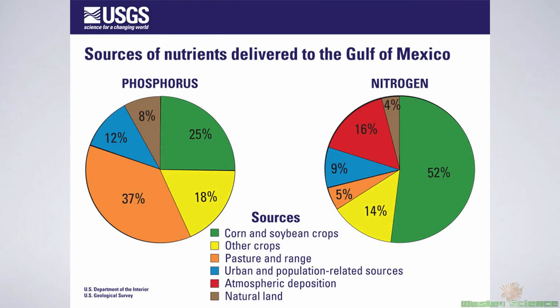These two pie charts show the sources of nutrients delivered to the Gulf of Mexico — that's the Mississippi River area near Louisiana and Florida. You can see that for phosphates, a lot of it is coming from growing animals to eat — cows, pigs, things like that — and also from growing corn, because corn syrup is found in all the cheap food Americans eat, along with other crops. If you look at the nitrogen from nitrates, half of it is from corn and soybean crops, and not nearly as much is used on pasture and range. It's pretty interesting to see where the sources of our nitrogen and phosphorus come from in these two pie charts.